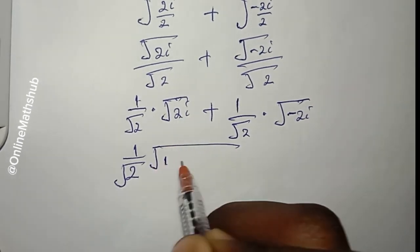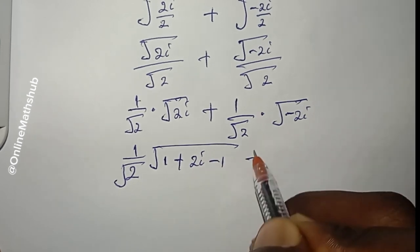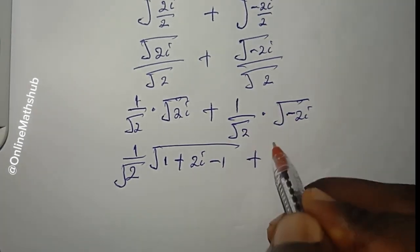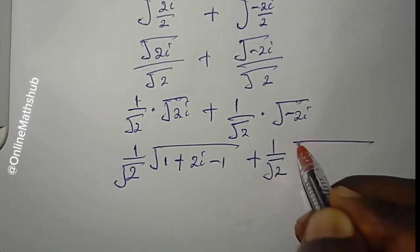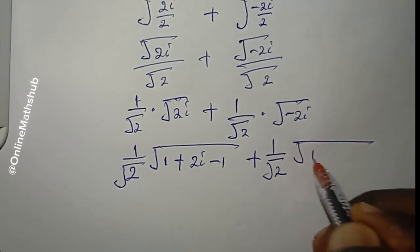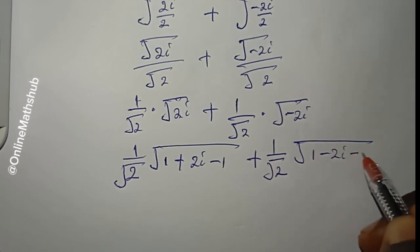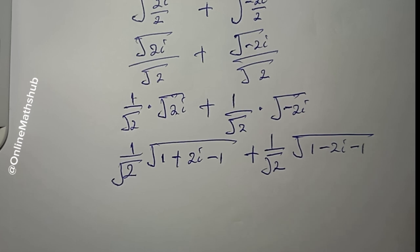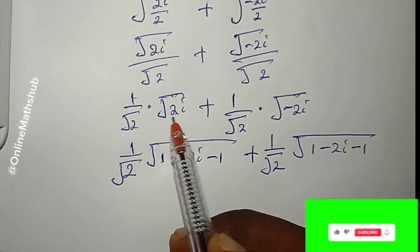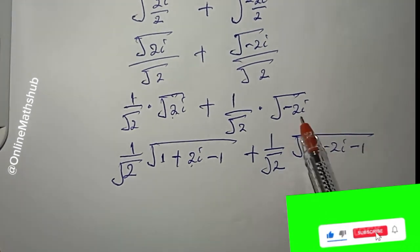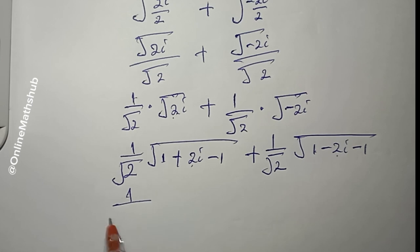Next, I'll rewrite the expression. For the first term: (1/√2) times √(1 + 2i - 1), and for the second term: (1/√2) times √(1 - 2i - 1). Note that 1 - 1 = 0, leaving 2i on one side and -2i on the other — which is exactly what we had.